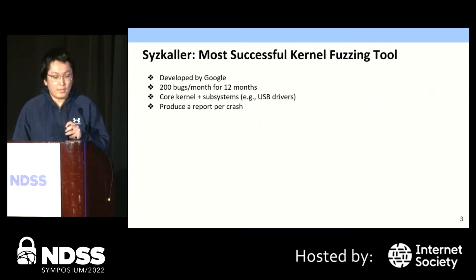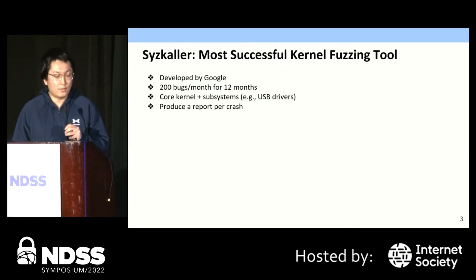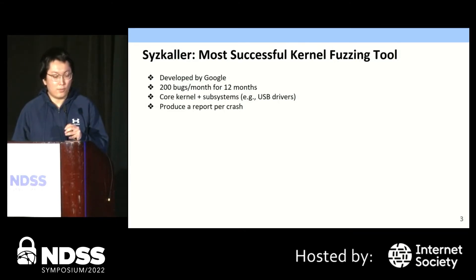To secure the Linux kernel, the community has developed many tools to detect kernel bugs. Among all the tools, the most successful one is Syzkaller. It is developed by Google and is able to find 200 bugs per month over 12 months. It can discover bugs not only in the core kernel but also in subsystems like USB drivers. When triggering a bug in the kernel, Syzkaller will produce a crash report like this.